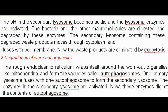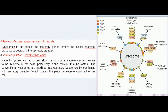For degradation of worn-out organelles, the rough endoplasmic reticulum wraps itself around worn-out organelles like mitochondria to form vacuoles called autophagosomes. A primary lysosome fuses with the autophagosome to form a secondary lysosome, whose enzymes are activated and digest the contents. Lysosomes in secretory gland cells also remove excess secretory products by degrading secretory granules.